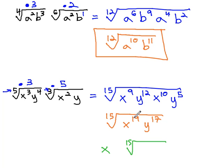For the x's, 19 divided by 15 is 1, remainder 4. This means 1 comes out, and 4 remain inside the radical. For the y's, 17 divided by 15 is 1, remainder 2. This means 1 y comes out, and 2 y's remain inside the radical.